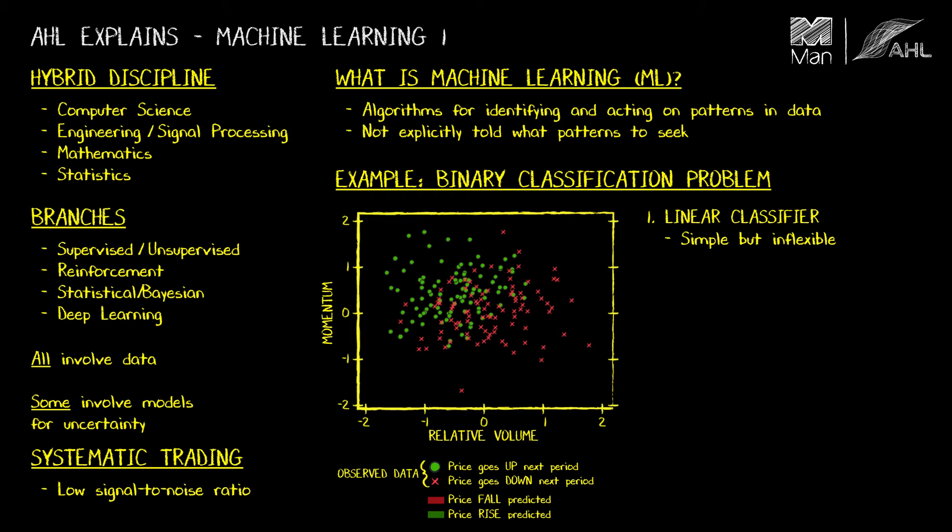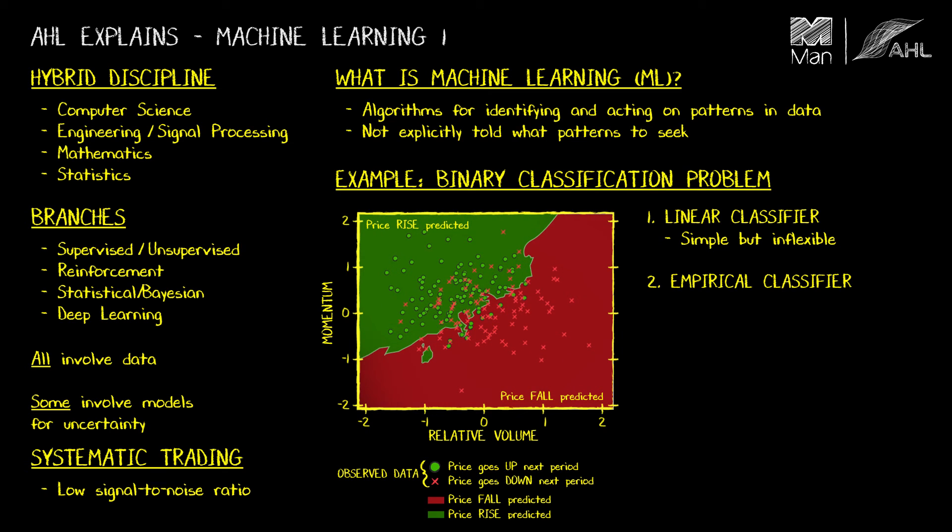The next classifier we'll examine does not specify any equation for the decision boundary. So in that sense, it is our first example of a machine learning algorithm. What I'm going to do is, for every pixel in the diagram, I'm going to look at its 15 nearest points, and I'm going to shade that pixel red or green according to the majority of those 15 closest observations. This is a very empirical approach, and it leads to a very flexible boundary. But it does not result in a very stable boundary, and it also may produce isolated islands of green or red, like those shown here.